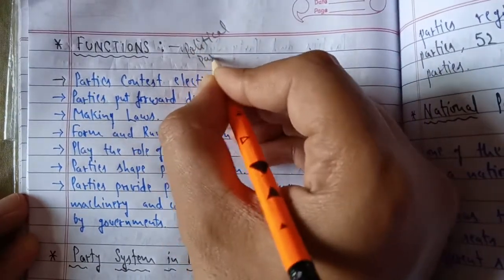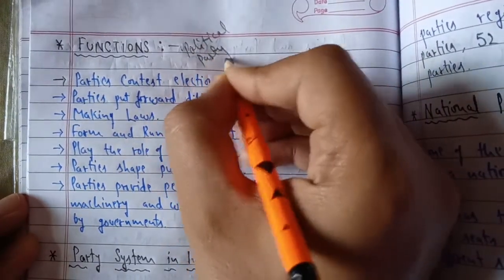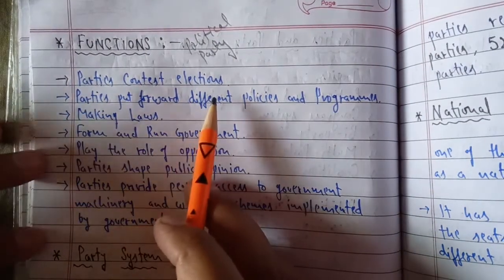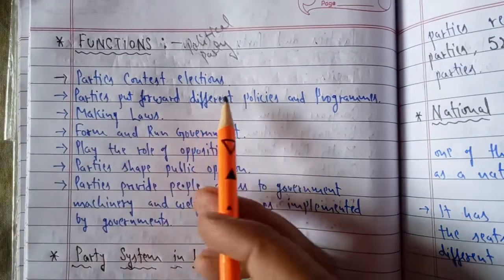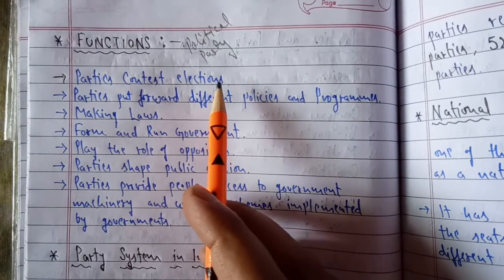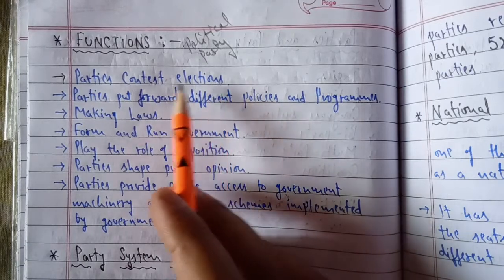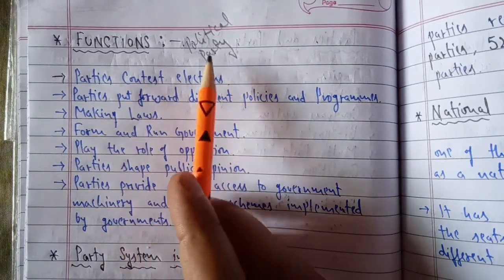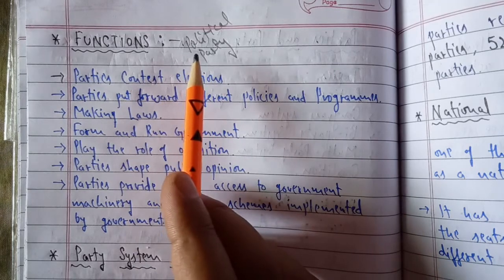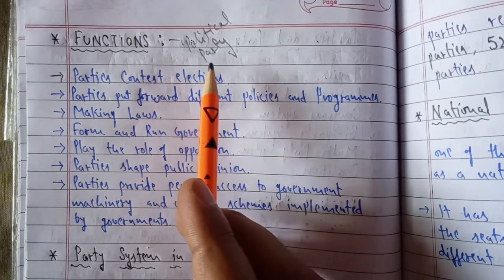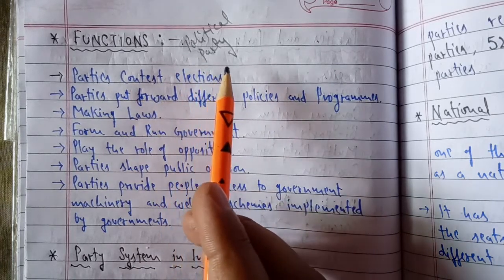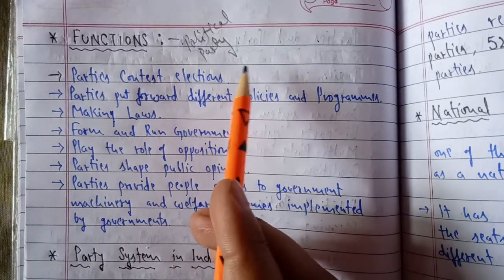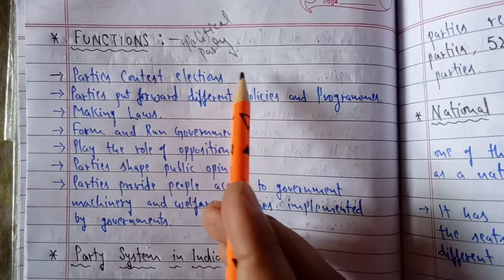Now let's see the functions of a political party. The first and most important function is that parties contest elections. Only after contesting elections are they elected, form government, and have the power to lay out various plans and policies for the welfare and development of society.